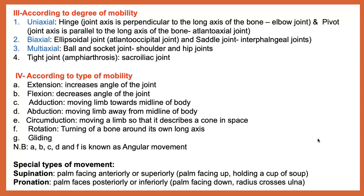In certain animals such as the dog, because the radius and ulna are separated, we have what is called supination — moving the forefoot upward — and also pronation. Supination means holding the palm up and pronation is the reverse. This is only present in certain animals where the radius and ulna are separated, like the dog and also the human being.